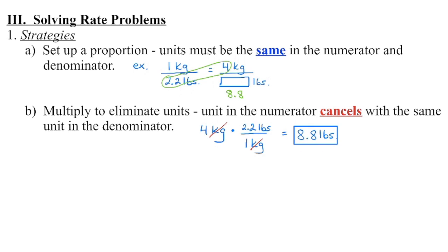So you can see we get the same answer. If you're going to use a proportion, they're equal to one another, same unit, same line. If we're going to eliminate the units, we're going to be multiplying by the conversion factor. We're going to have the unit we want to cancel on the opposite line so that it divides out.